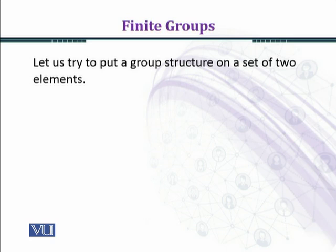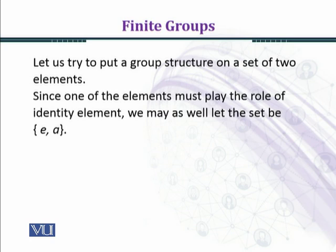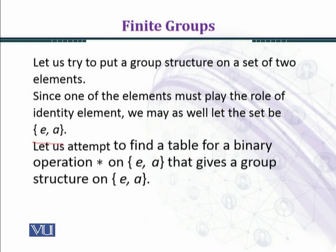Let us try to put a group structure on a set of two elements. Since one of the elements must play the role of identity element, we may as well let the set be {E, A}. As you know, the existence of an identity element in a group is a necessary axiom, so one element should be E and the other we assume to be A.